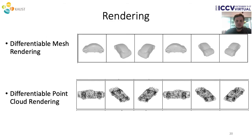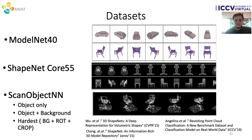We used PyTorch3D for both differentiable mesh rendering when mesh data is available, and differentiable point cloud rendering when only 3D point clouds are available. The datasets we used include ModelNet40 for classification and retrieval, ShapeNet Core 55 for retrieval, and ScanObjectNN, which consists of realistic 3D scans of objects and has 3 variants.